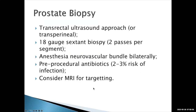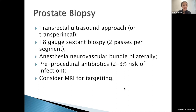Prostate biopsies are usually done transrectal. Sometimes a transperineal approach is required, usually because the patient doesn't have a rectum. The advantage of a transperineal approach is almost no risk of infection. For random biopsies, we usually do a sextant biopsy — six segments, two passes per segment, using an 18-gauge biopsy. We always want to provide anesthesia to the neurovascular bundle. [Note: the session may be automatically ending at 8; we'll continue and potentially have a follow-up session.]